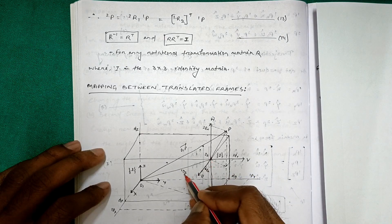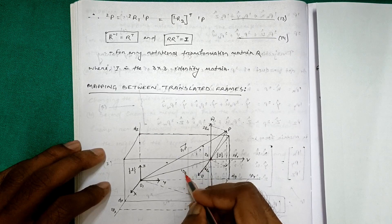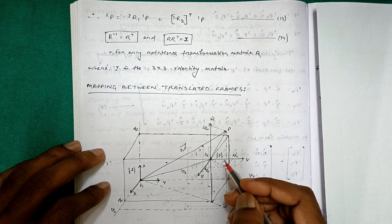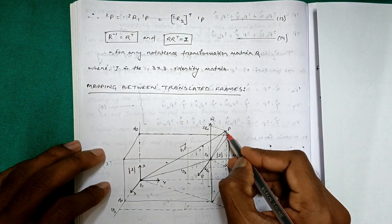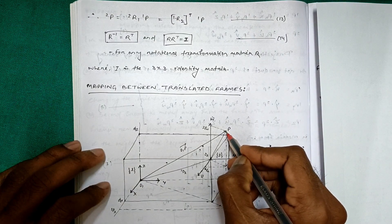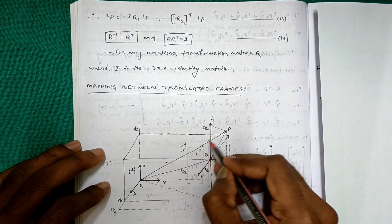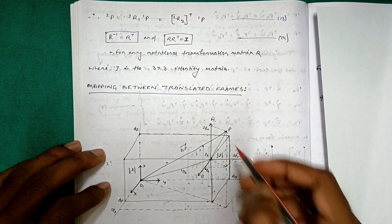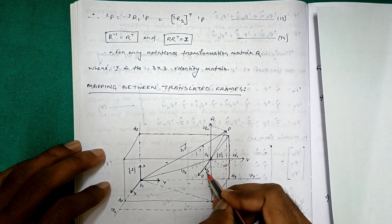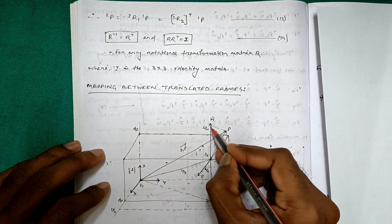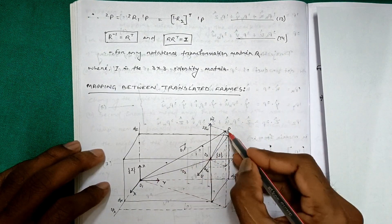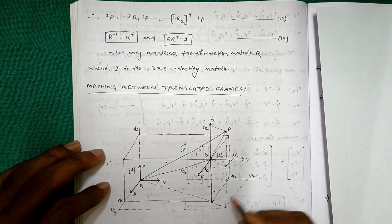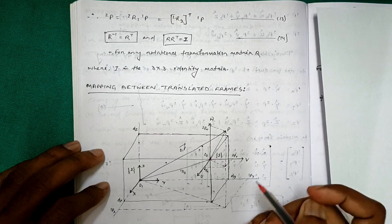The difference between the first origin O1 and the second origin O2 is the translation distance, denoted od2. We take a point P, where O1P is the vector from O1 to P, and O2P is the vector from O2 to P. The components in frame 2 are 2pu, 2pv, and 2pw, and in frame 1 are 1px, 1py, and 1pz.